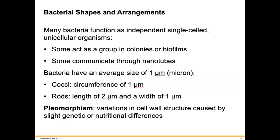Some bacteria act as a group in colonies or biofilms, and they're going to be stronger and harder to get rid of when working together in something like a biofilm. Some bacteria have the ability to communicate through nanotubes. The average size is about one micron. The two main shapes are the cocci — pronounced 'cocci,' not 'cocci' — and the rods.